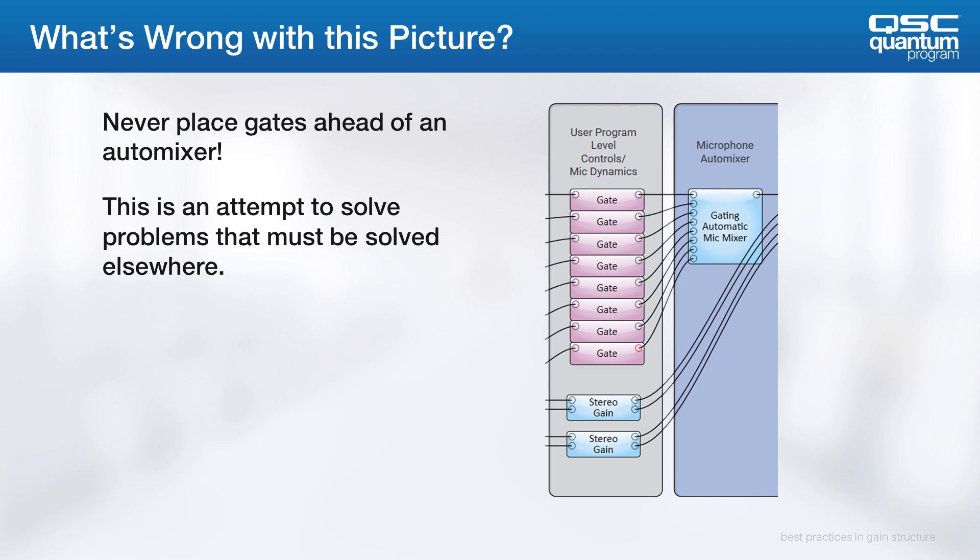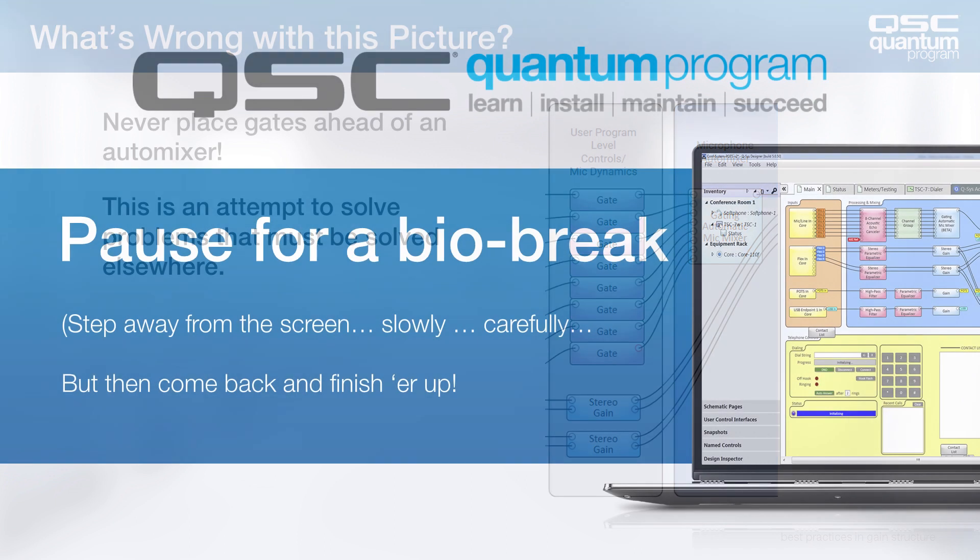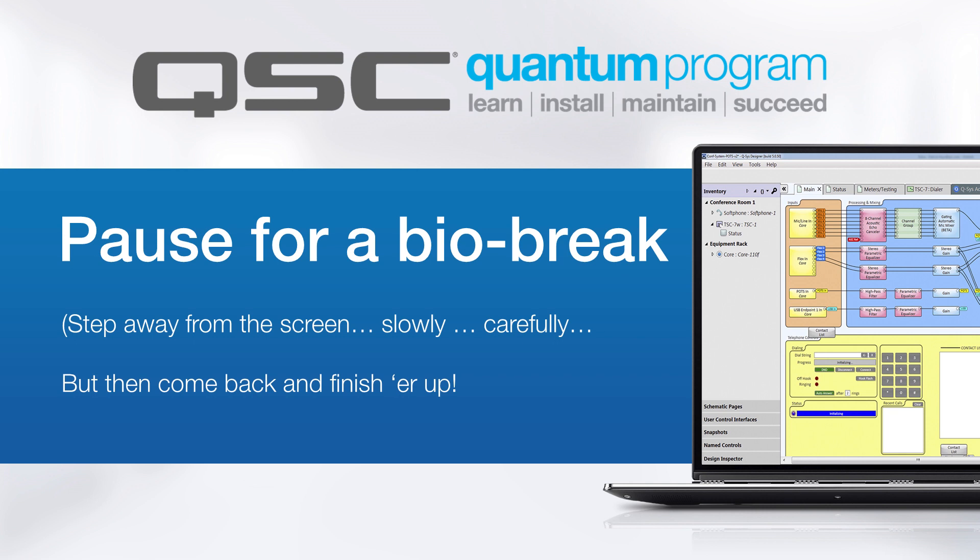Remember, the automixer needs to know the noise level to decide who gates. A gate ahead of that will just confuse the algorithm. Alright, let's wrap up that subject here, and then we'll move on to the next part in the next video.